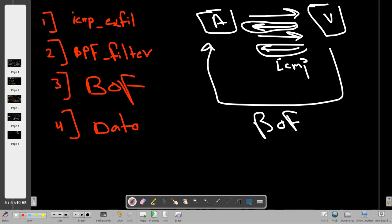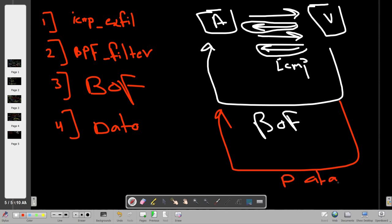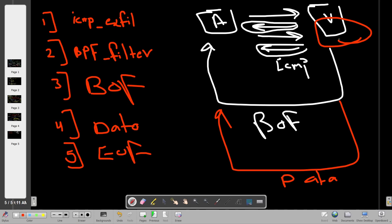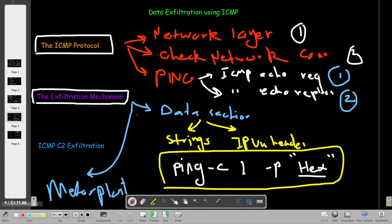Metasploit will wait for the data coming from the victim machine to the attacker machine. Lastly, to end the writing of data to disk on our attacker machine, we send something called the EOF — end of file — also sent from the victim to the attacker machine. To do all of this you need full control over the compromised machine. That's how it works in Metasploit — using either ping or Metasploit, most of the time you will use Metasploit.